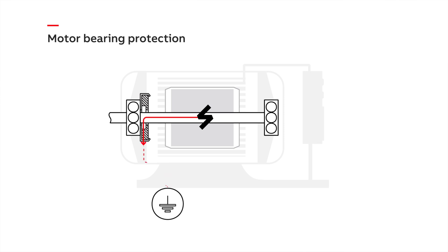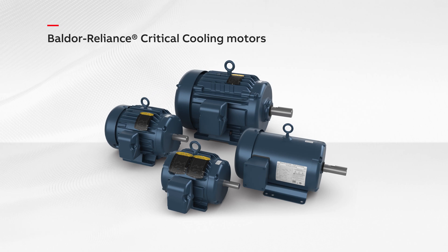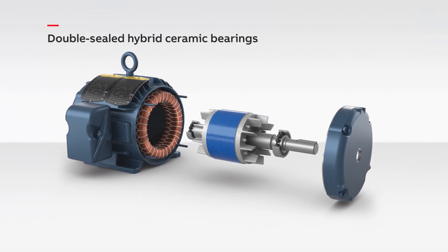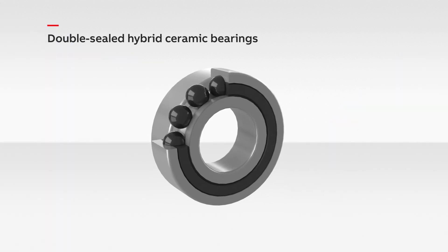These components are wear items and will become less effective over time. ABB offers an unprecedented lifetime warranty on motor bearings against shaft current in our Bowler Reliance critical cooling motors. We promise your bearings will not fail due to common mode voltage. Our critical cooling motors utilize double-sealed hybrid ceramic bearings on both ends of the motor. These components prevent bearing damage caused by shaft currents because they are non-conductive — it's a foolproof method of protecting your motor bearings from shaft current failures.